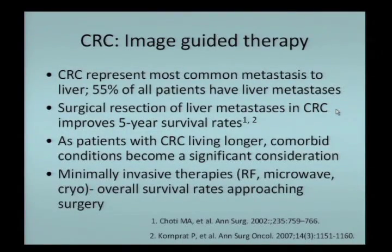Colorectal carcinoma represents the most common source of liver metastases; over half of patients with this cancer will have liver metastases at some point. Surgical resection of liver metastases has been shown to improve five-year survival rates. As patients live longer, comorbidities like heart disease may preclude surgery, so image-guided therapy plays a big role in treating these metastases—typically RF ablation, microwave, or cryotherapy for local ablation, with overall survival rates reported to approach those of surgery.